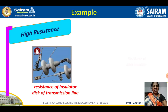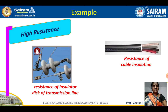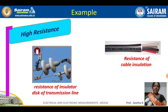Under high resistance — greater than 0.1 megaohm — examples include the resistance of insulators, the insulated discs of transmission lines, resistance of cable insulation, or any insulation resistance. These all come under the category of high resistance.